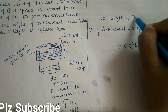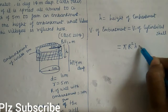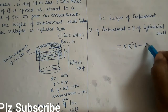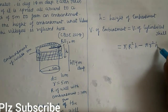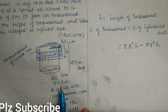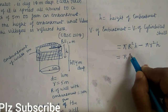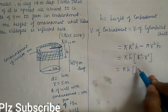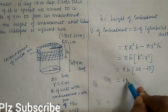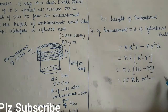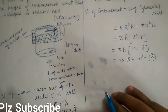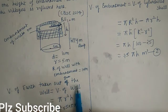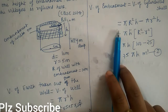Since π H is common, volume of embankment = π H (R² − r²). Capital R is 10 meter, so R² = 100. Small r is 5 meter, so r² = 25. Therefore volume of embankment = π H (100 − 25) = 75 π H meter cube.